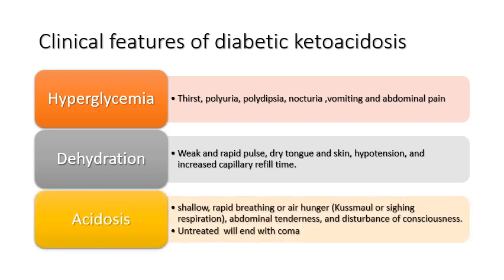Acidosis is clinically detected by the patient having shallow, rapid breathing — called Kussmaul or sighing breathing. This rapid breathing represents the compensatory mechanism by which the body increases ventilation to wash out CO2 from the lungs and raise blood pH — a compensatory respiratory alkalosis for the metabolic acidosis. In patients with severe acidosis, there may even be abdominal pain and disturbance in conscious level. If left untreated, this can lead to coma and even death, though nowadays mortality from DKA is extremely low due to effective fluid and insulin therapy.